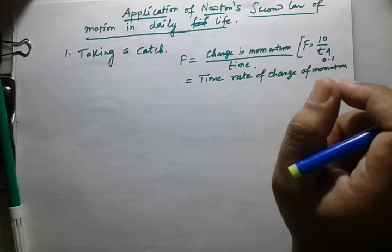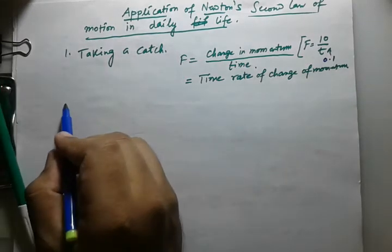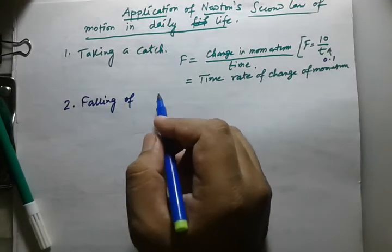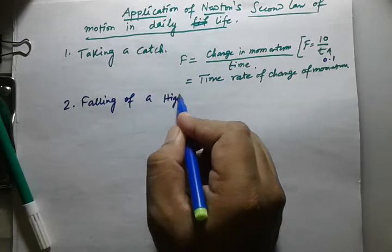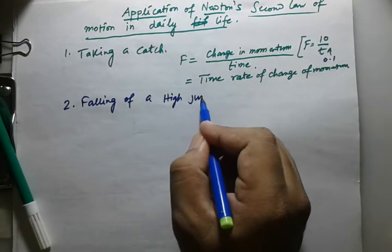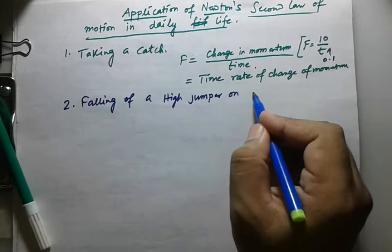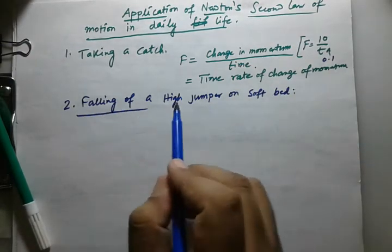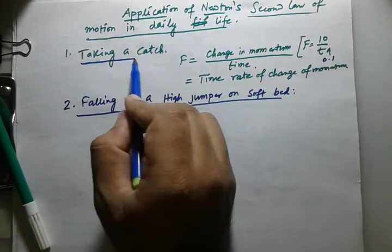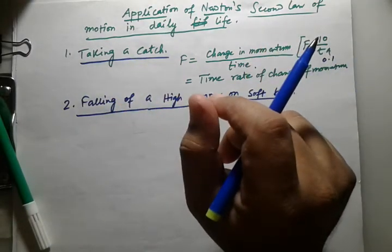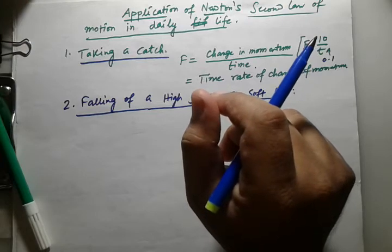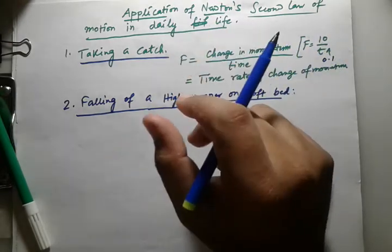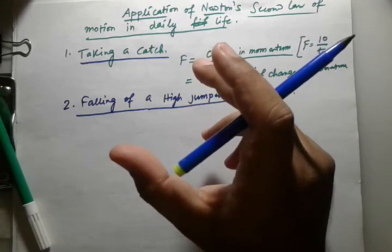The second application is falling off a high jumper on a soft bed or heap of sand. In high jump activities, athletes are made to fall on a soft cushion floor or sandy floor. This decreases the rate of change of momentum by increasing the time taken.